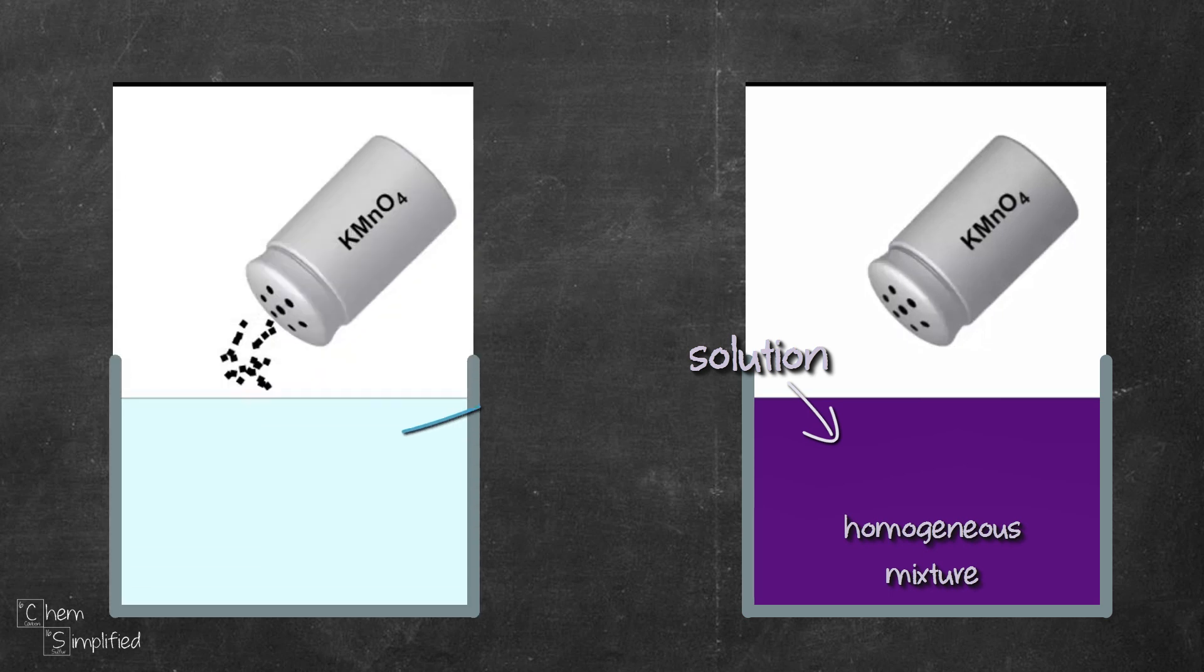So water in this case is the solvent, and potassium permanganate is the solute. In this example we have more water, so that's why it's the solvent, and since we have less potassium permanganate, that's why it's the solute.